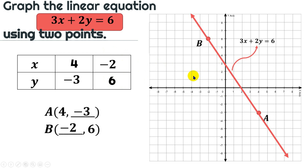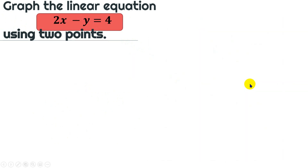The steps are a bit lengthy because we substitute twice in our linear equation just to find the missing coordinates. Once we have all coordinates for each point, we plot them and then draw the line. That's example number 1. Now let's move to example number 2: graph the linear equation 2x - y = 4 using two points.